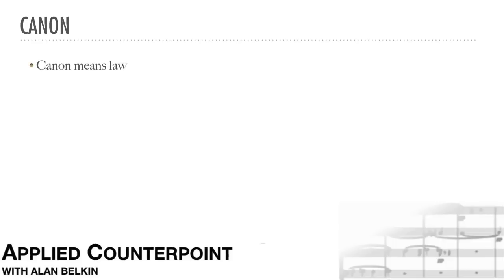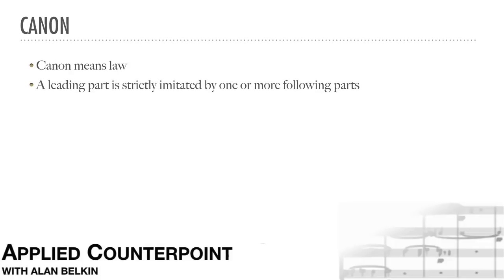The word canon means law, and that is exactly what a canon is: a piece of imitation where a leading part is strictly imitated by one or more following parts. Unlike imitation in fugue, where the following part may deviate occasionally from the leader in order to make better overall harmony or to fit better in context, imitation in a canon is rigid, allowing for no deviations, except at the very end in order to make a more convincing cadence.